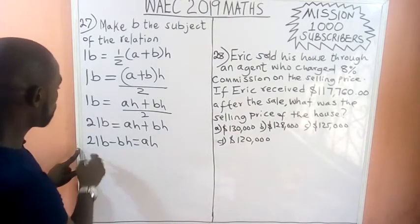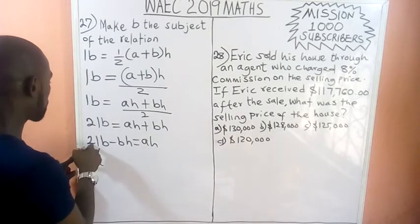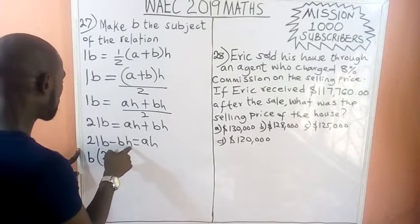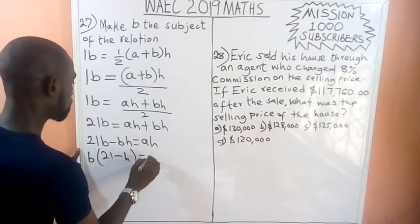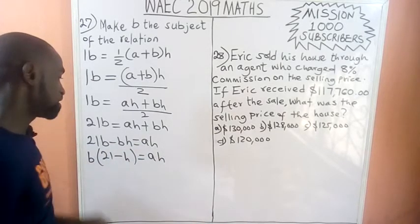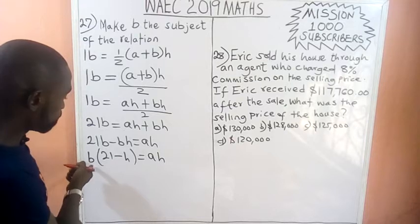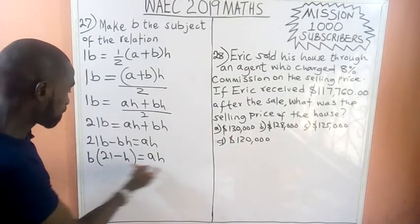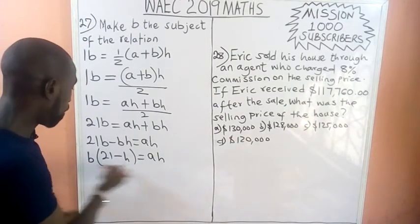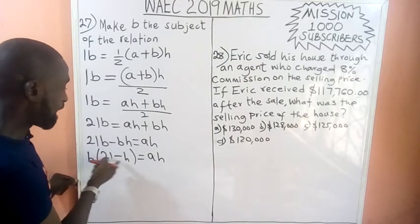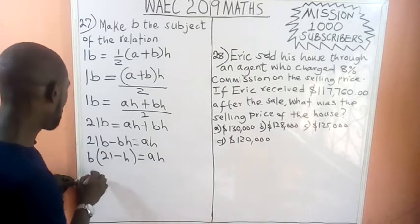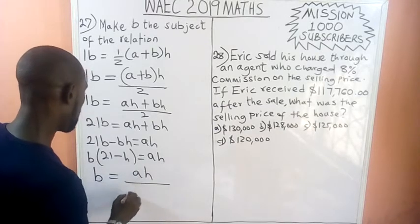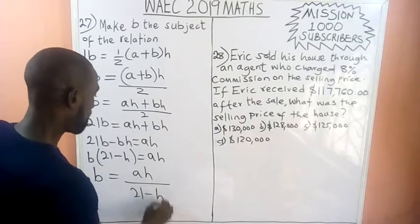If I bring b out, I have b open bracket 2l minus h, close bracket equals ah. So to make b stand alone, I divide both sides by 2l minus h. So b equals ah over 2l minus h. The correct answer to question 27 is option A: ah over 2l minus h.